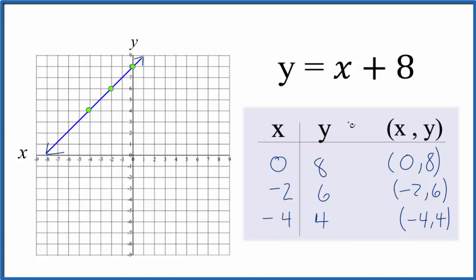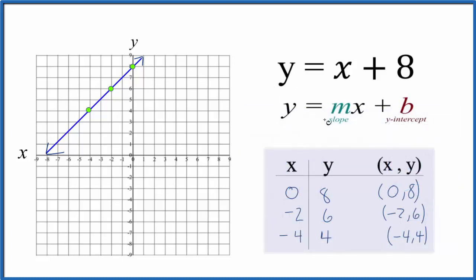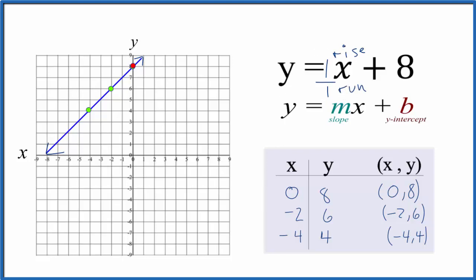Let's use the slope-intercept formula to check our work. We have y equals mx plus b, where b is the y-intercept — that's where we cross the y-axis. So we go to the y-axis and up to 8, right there — that's our first point. Now we look at x and consider it as 1x, which is the same as x. We can write it as 1 over 1, which equals 1, and that gives us rise over run. Making this a fraction gives us rise over run.